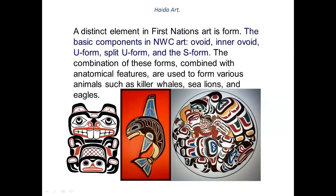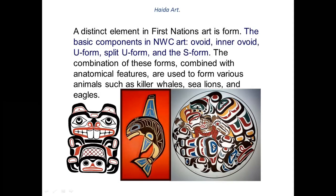Let's look at some of the other iconography and the way they're put together. This is mainly from the Northwest area. It gives you an idea of the basic components — the oval, inner ovoid, the U form, the split U form, and the S form. In cultures in the West, we've often concentrated on angular forms — construction, the square, the rectangle, harder angular diagonals. Here, you can see the native people are more about circles, more about S's, more about U's — more about curvilinear aspects in their creation of art forms. It's about smoothness, it's about flow.